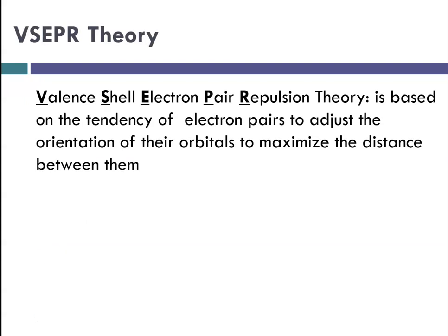Negatively charged electrons are going to repel one another — like charges repel. So electron pairs in different orbitals are going to stay as far apart from one another as possible. We introduced something called VSEPR theory, which stands for Valence Shell Electron Pair Repulsion Theory. It is based on this tendency of electron pairs to adjust the orientation of their orbitals to maximize the distance between them because of repulsion of like charges.